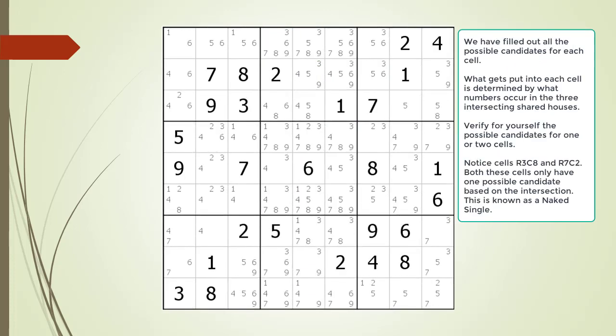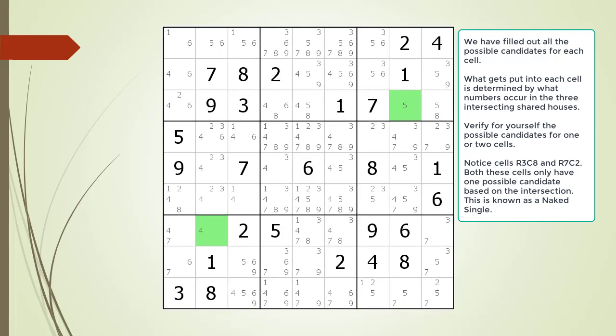We have filled out all the possible candidates for each cell. What possible candidates go into each cell is determined by what numbers occur in the three intersecting shared houses. Take a moment and verify which possible candidates should be in one or two cells. Identifying possible candidates is an important part of solving a Sudoku puzzle — you should always be able to determine what possible candidates go into a cell.